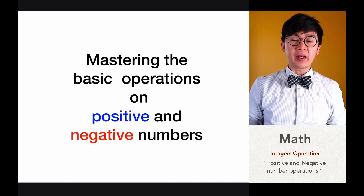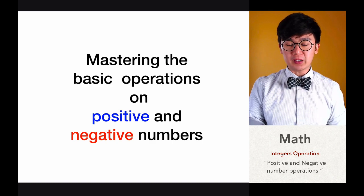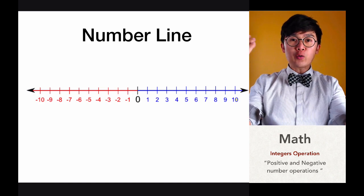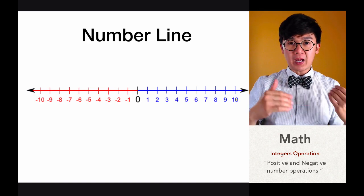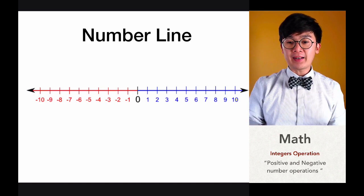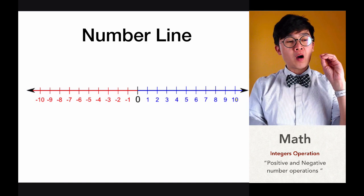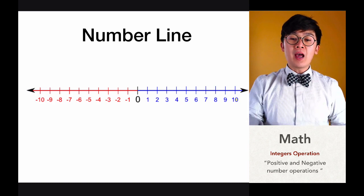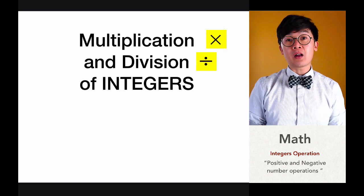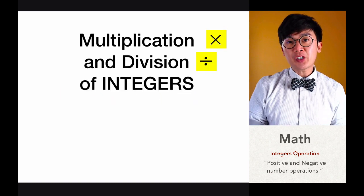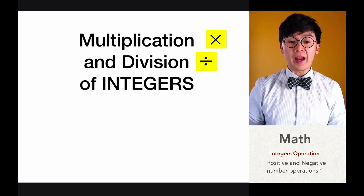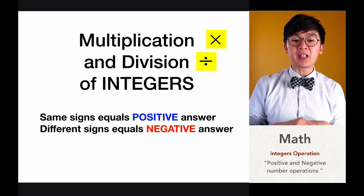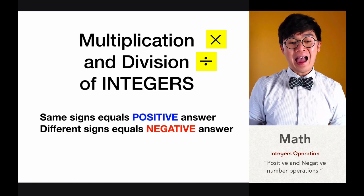When working on operations involving integers, it is extremely important that you know or can visualize your number line when you add, subtract, multiply, and divide positive and negative numbers. Among the four basic operations on integers, multiplication and division would be the easier operations to work on. We're going to cover the rules on multiplying and dividing first, and then we'll do addition and subtraction afterwards.